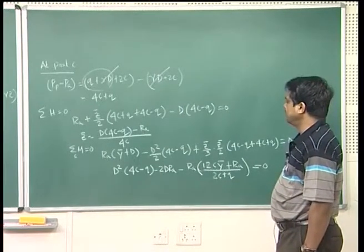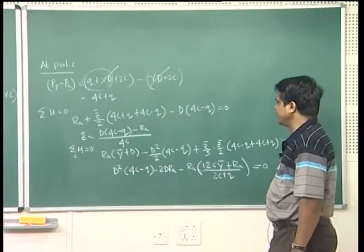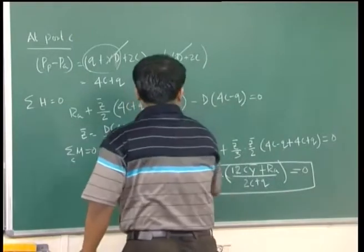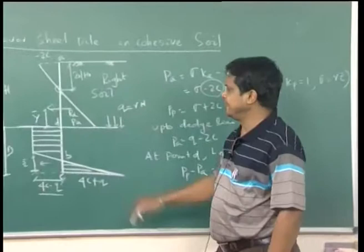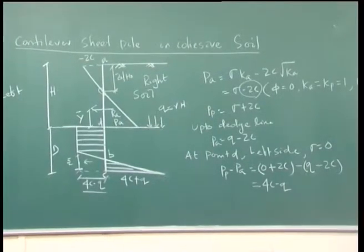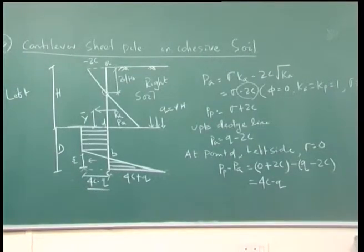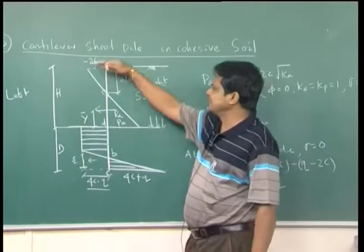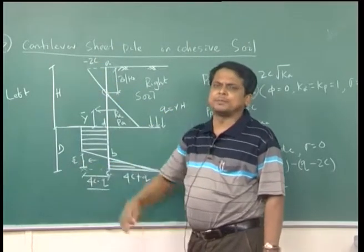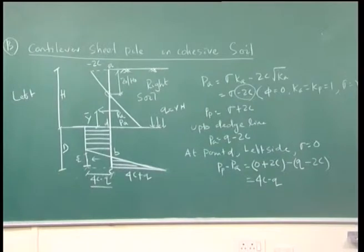This is a quadratic equation in D, so it can be solved to find the embedment depth. Once D is obtained, apply a factor of safety of 20–40%. With the given height H above the dredge line and the loads, this gives the required depth of embedment for a cantilever sheet pile wall in cohesive soil.